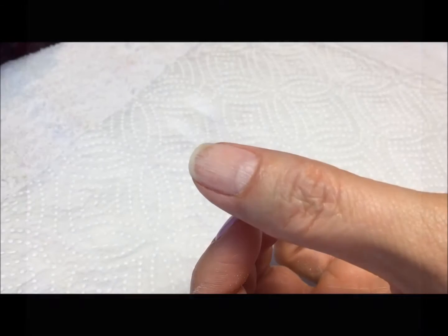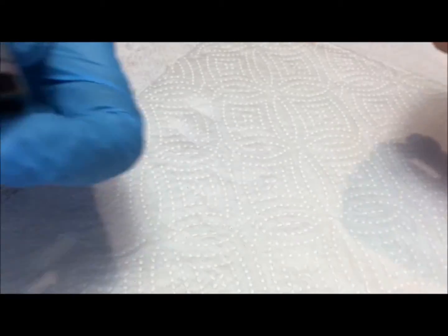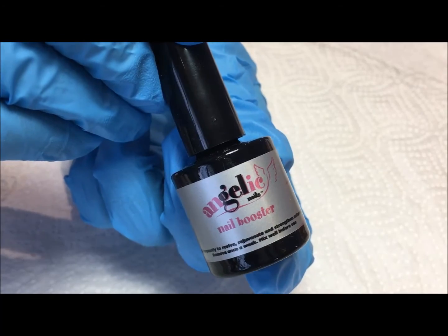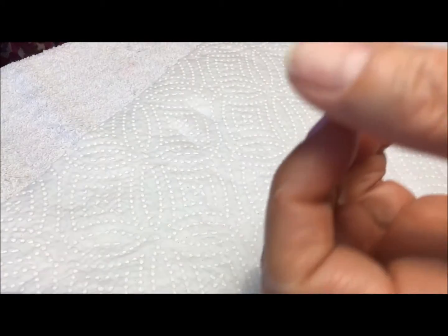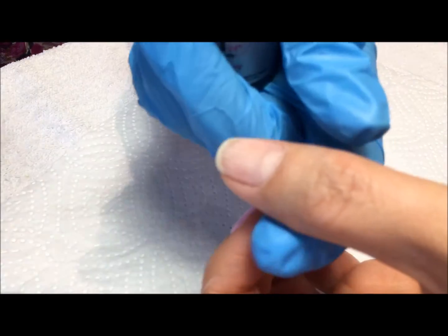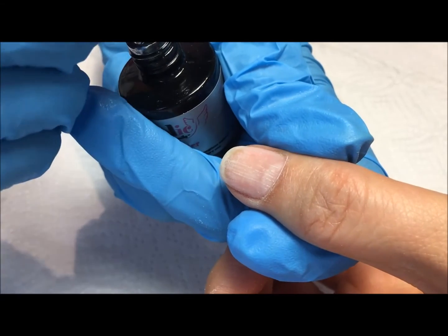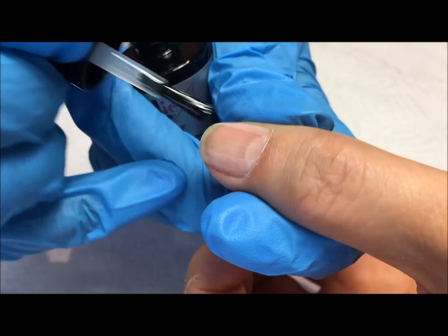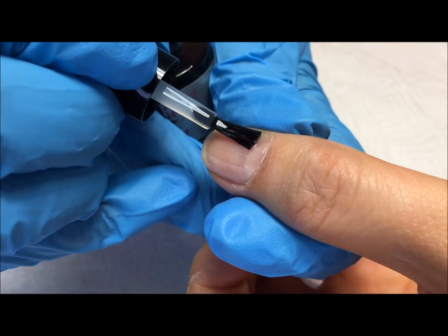Nail Booster is a nail strengthener that revives, rejuvenates, and strengthens natural nails with extended use. Apply one to two coats of Nail Booster to the natural nail every one to three days for a week. Remove the Nail Booster after one week with Angelic Nails Varnish Remover and repeat the application.